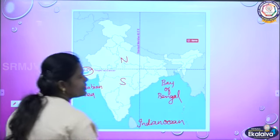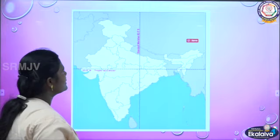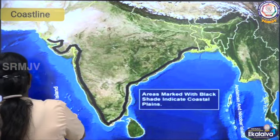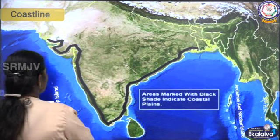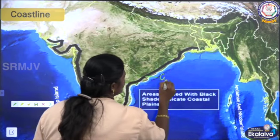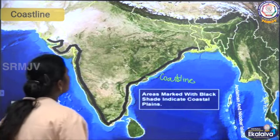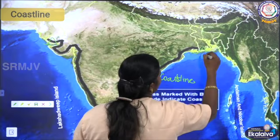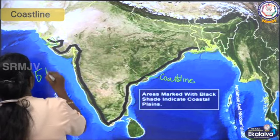India is the only country in the world which has an ocean named after it. The coastline is the area where land meets the ocean or sea. India's coastline begins from the Gulf of Kutch in the west and ends at West Bengal in the east, with a total length of 7,517 kilometers.